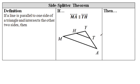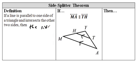Let's go ahead and formalize this — this is called the side splitter theorem. If a line is parallel to one side of a triangle and intersects the other two sides, then the sides are divided proportionally. So it divides them proportionally — that's the whole idea here.